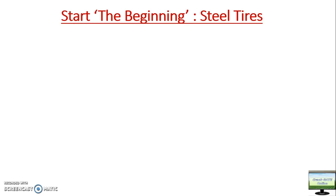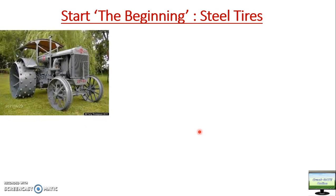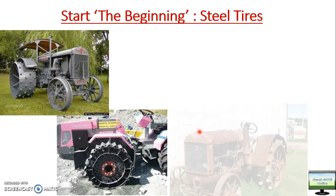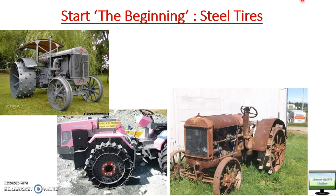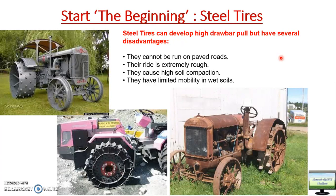Initially people were using steel tires, which were not the same as what you see today. Today we have rubber pneumatic tires in which air is filled. Those steel tires had certain advantages — like being able to develop a high drawbar pull. You can see in the photographs the very large lugs on each tire, which could penetrate into the soil and generate good traction and good drawbar pull.